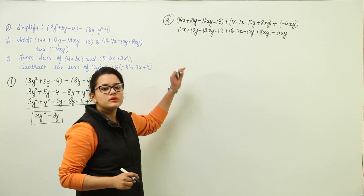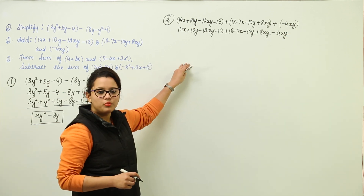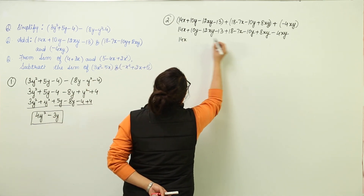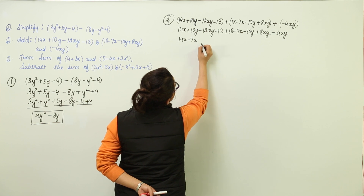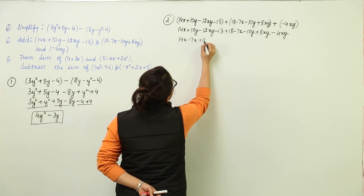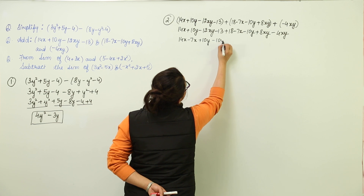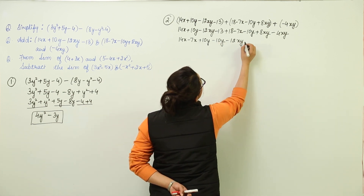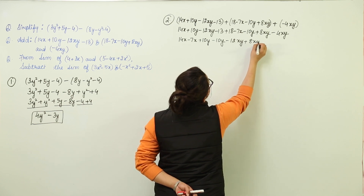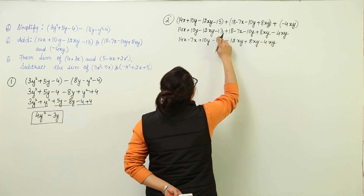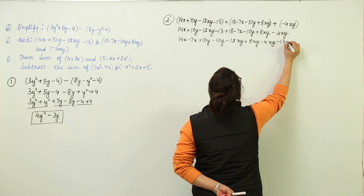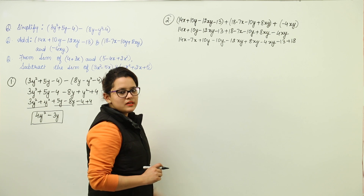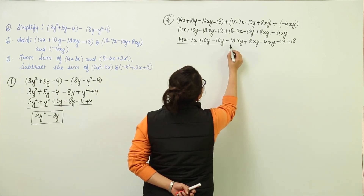Now that all brackets are opened, we group the like terms together. We have 14x minus 7x; then 10y minus 10y; then minus 12xy plus 8xy minus 4xy; and finally minus 13 plus 18. That accounts for all the like terms grouped.